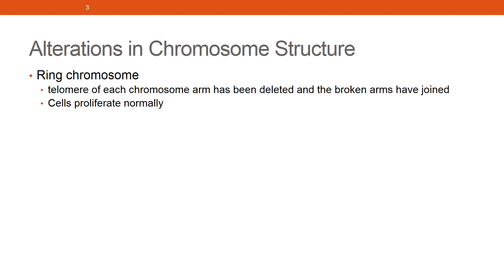Ring chromosomes occur when the telomeres of each chromosomal arm have been deleted and the broken arms join together to form a ring. A drastic consequence of this is that the ring chromosome can trigger a series of breakage and fusion bridge events, which cause continuous DNA breakage — like a chain reaction — and recombination of chromosomal material.